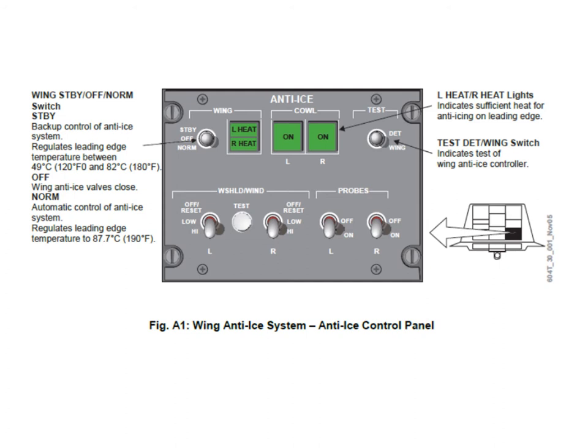Next to the wing anti-ice switch, there's what looks like a switch but is actually an indicator light showing 'left heat' and 'right heat'. Those lights illuminate when the wing leading edges are at sufficient heat. Then you have two switches for the cowl anti-ice - either on or off - controlling left and right separately. There's also a test switch to test the ice detection system and simulate icing conditions to verify the systems are working properly, plus a test switch for windscreen heating.